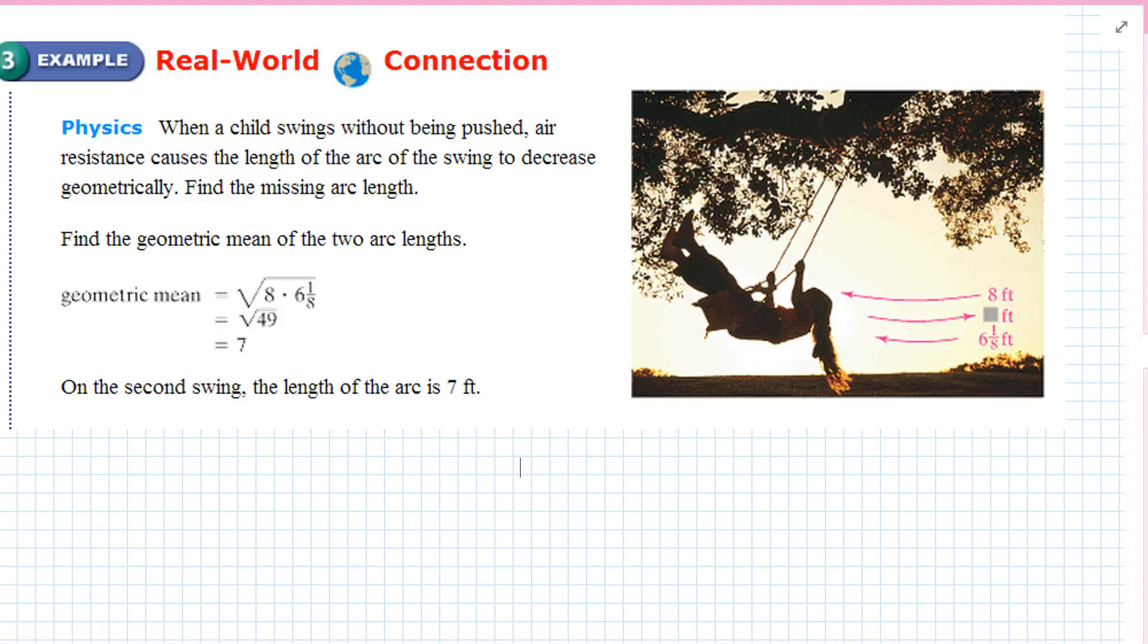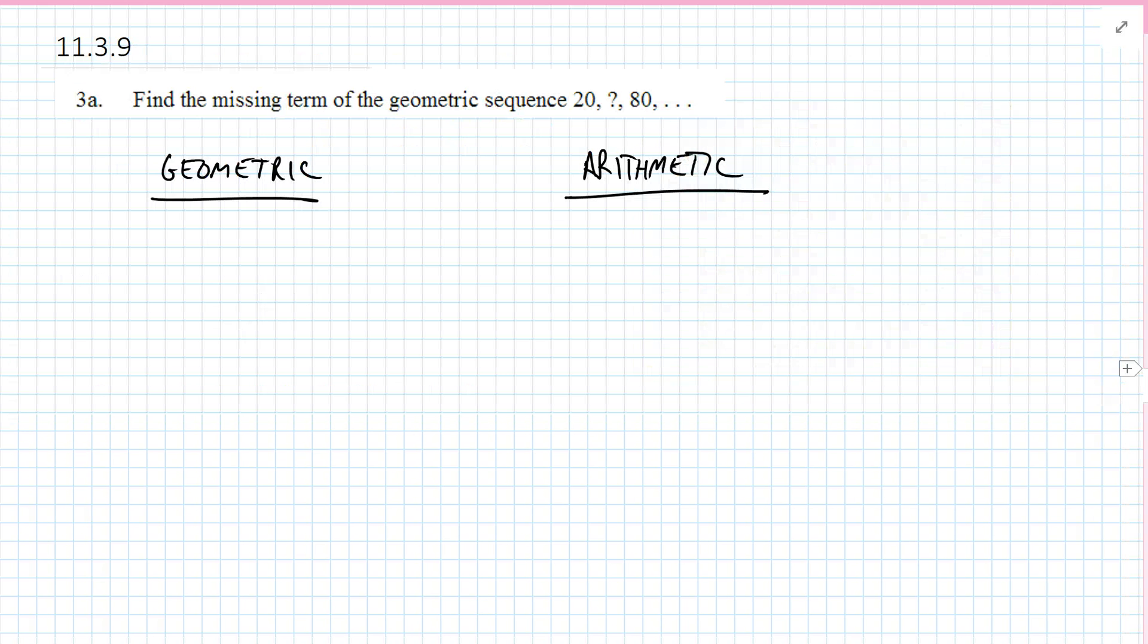When a child swings without being pushed, air resistance causes the length of the arc to swing to reduce geometrically. Find the missing arc length. The first swing was 8, the second swing was 6 and an 8. So you multiply those together, you get 49. Take the square root of it, 7. So the second swing of this example was 7.